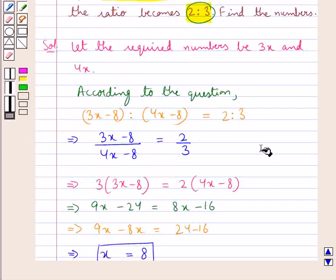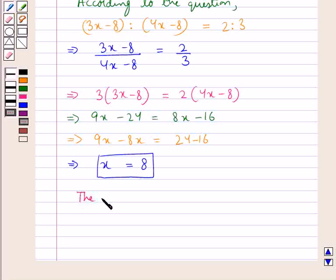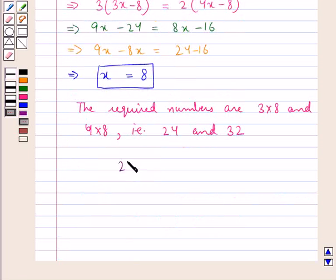We had assumed the numbers to be 3x and 4x. So we will put the value for x in these two numbers to get the required numbers. Thus the required numbers are 3 multiplied by 8 and 4 multiplied by 8, that is 24 and 32. So our final answer is 24 and 32.